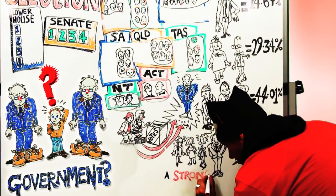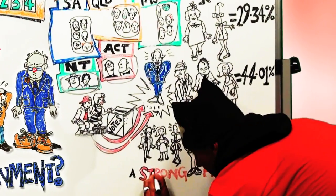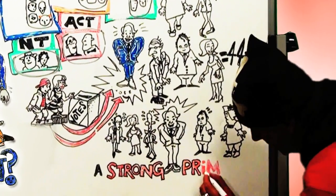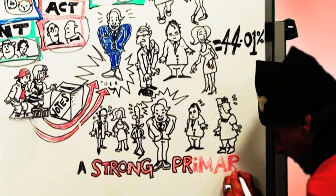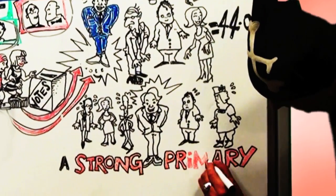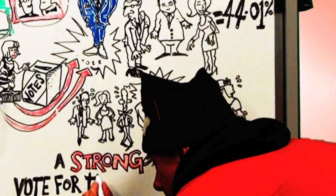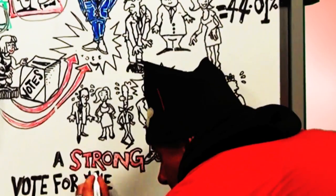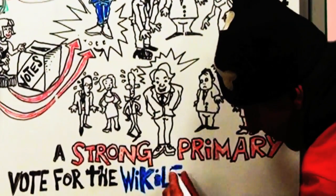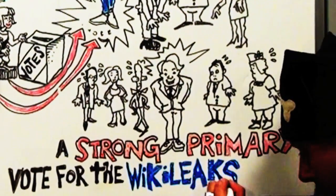This will not necessarily get the WikiLeaks Party over the line. We also need a strong primary vote, and you, dear supporters, are the only ones that can make that happen. Vote 1 the WikiLeaks Party in the Senate, and help make the Senate a House of Review, as intended.